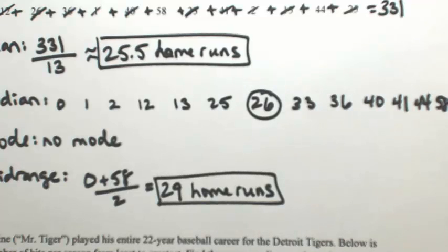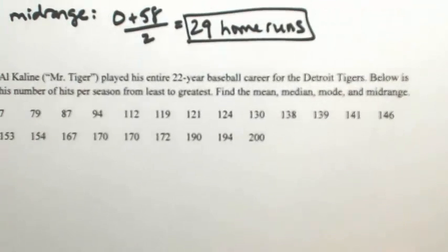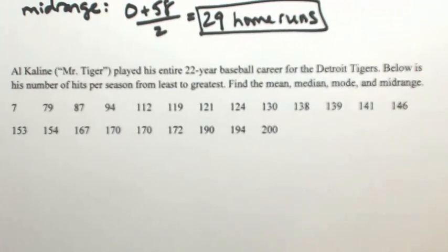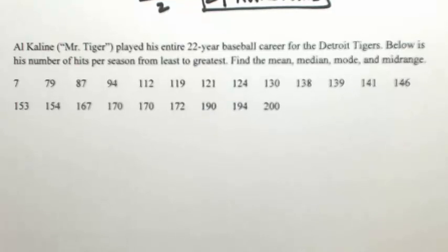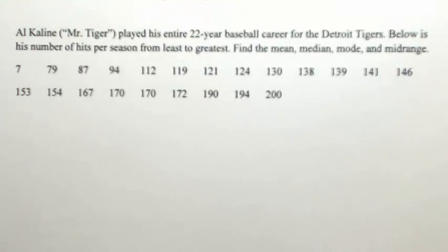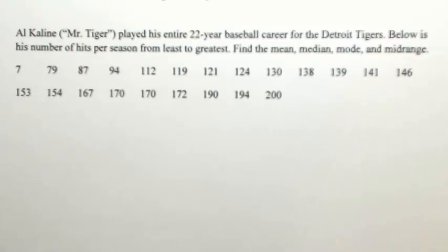Let's look at another one where everything's already in order for us. Let's look at another Tiger — Al Kaline, nicknamed Mr. Tiger. He played his entire 22-year baseball career for the Detroit Tigers. Below is the number of hits per season from least to greatest. Again, let's find the mean, median, mode, and mid-range.